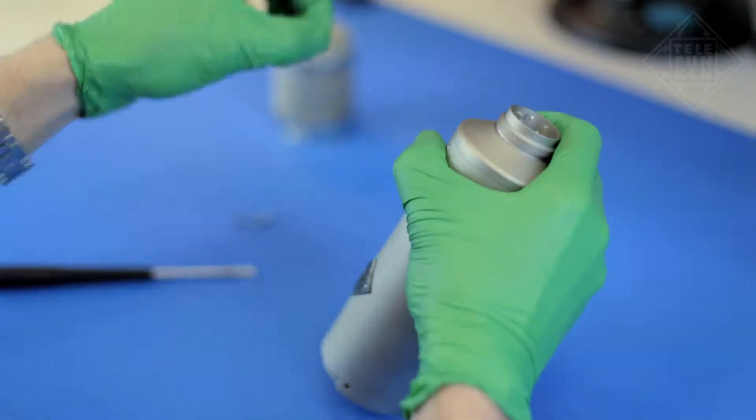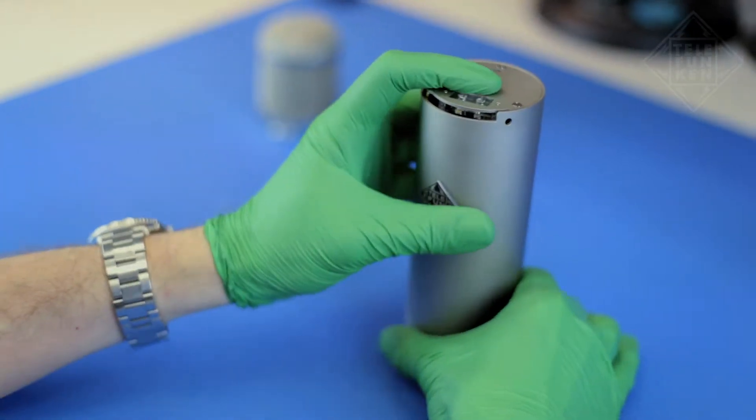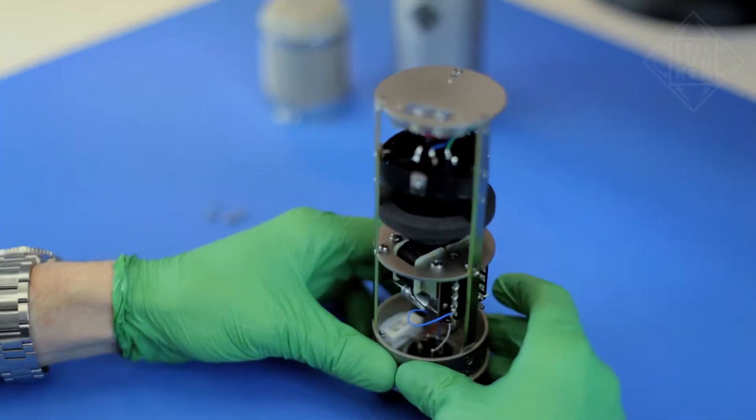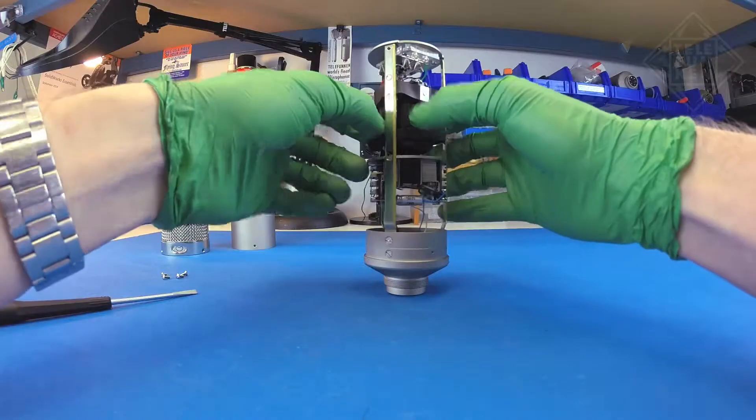With the microphone right side up, press down on the top plate while pushing up on the body tube. Be careful not to let the amplifier slip out of the body tube. Remove the foam damper.